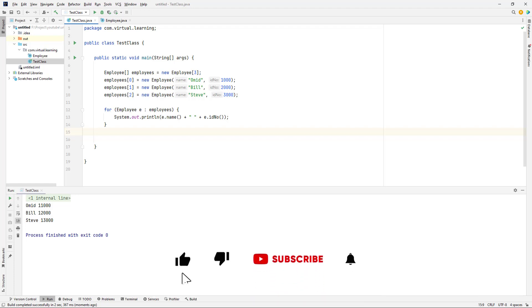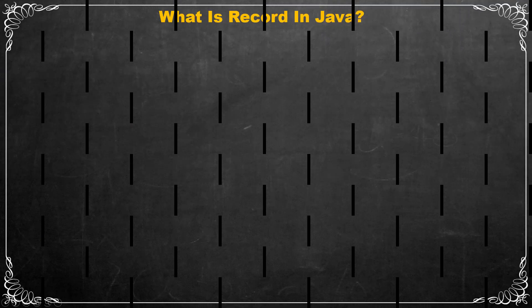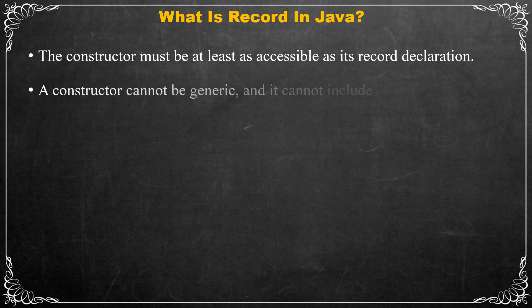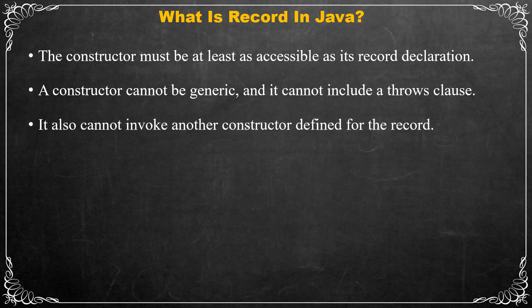Each component must be fully initialized upon completion of the constructor. The following restrictions also apply: the constructor must be at least as accessible as its record declaration, so if the access modifier for the record is public, the constructor must also be specified public. A constructor cannot be generic and it cannot include a throws clause. It also cannot invoke another constructor defined for the record.